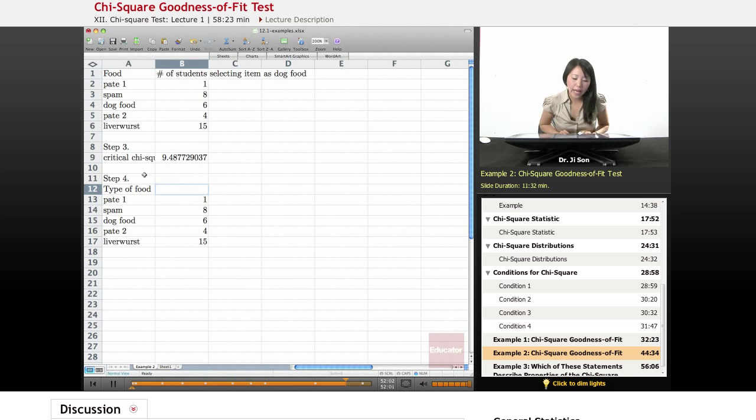And here we have our observed frequencies. The actual number of students that pick that thing to be dog food. So here we see one student pick pate 1 to be dog food. 15 students picked liverwurst to be the dog food. What are the expected frequencies?